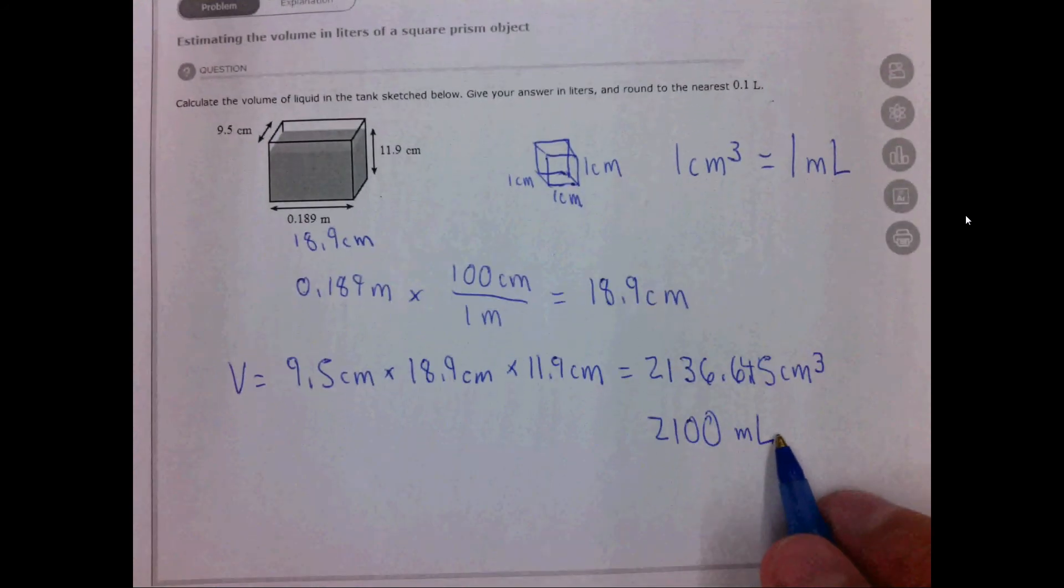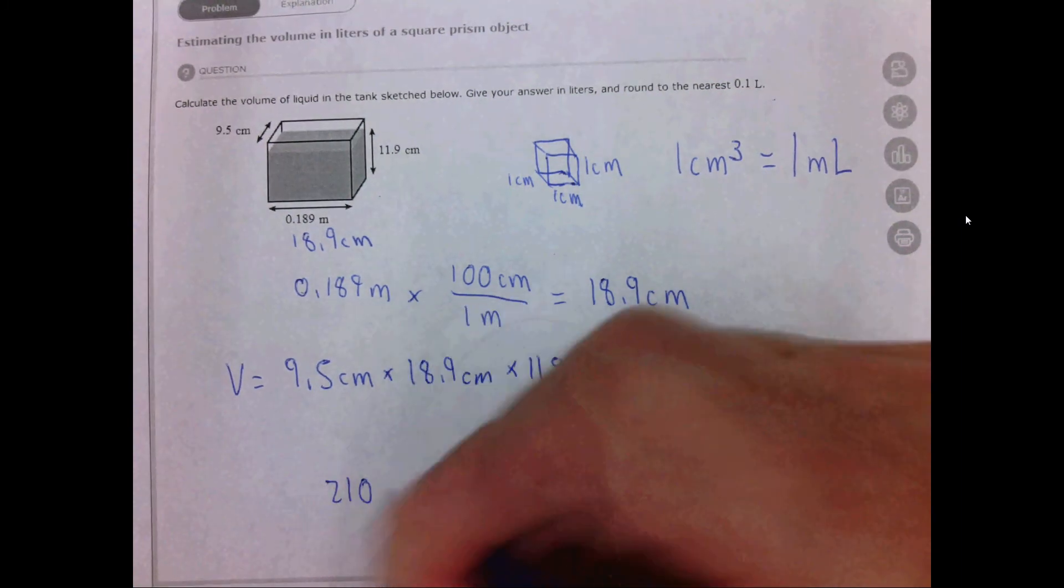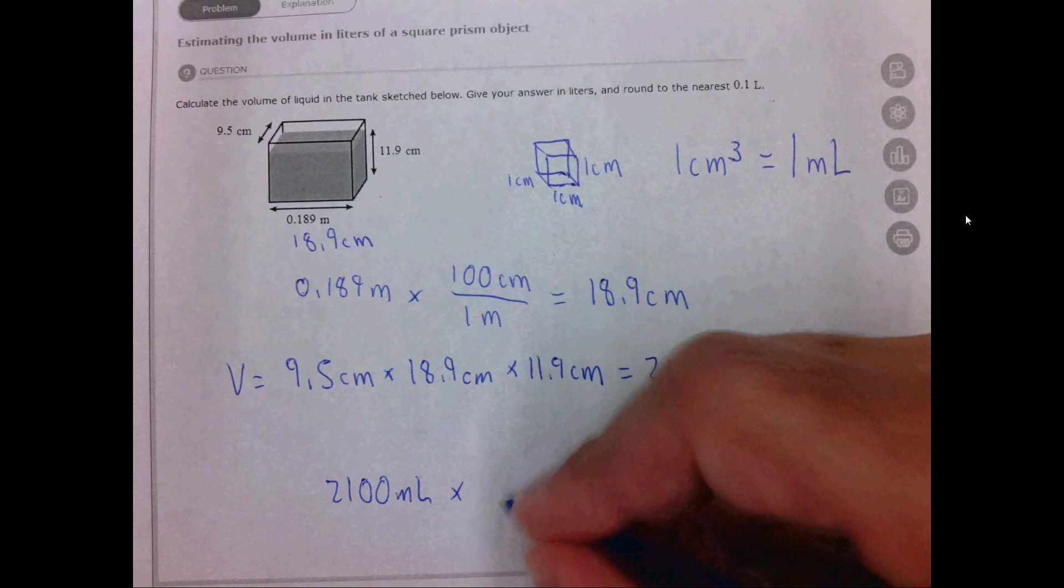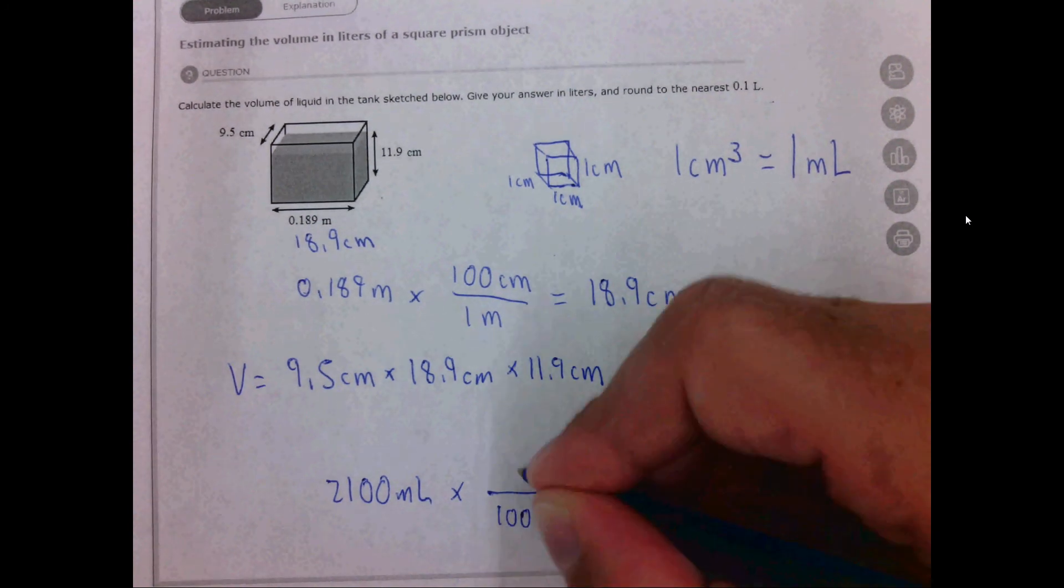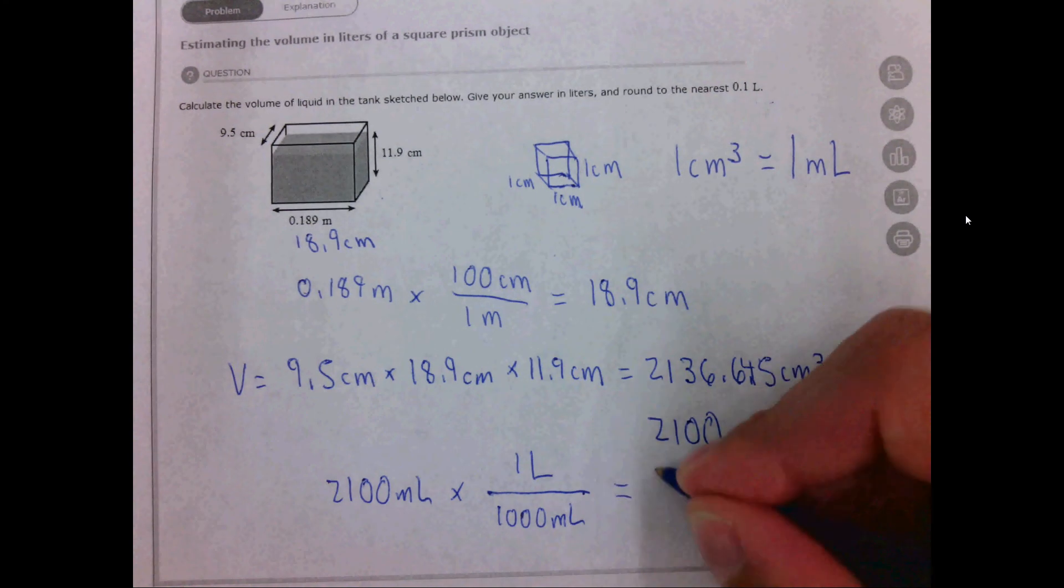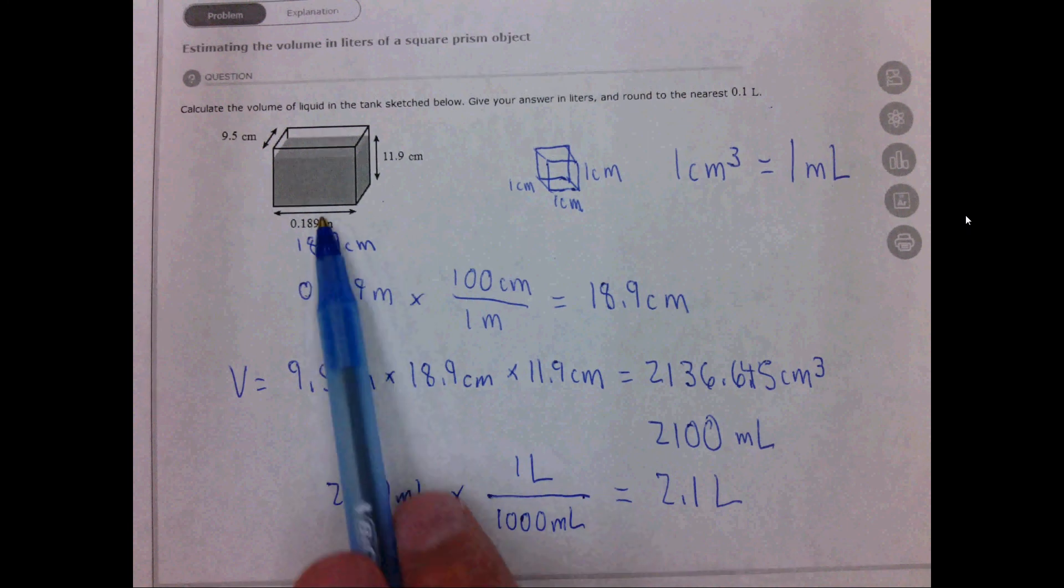Now we need to convert this volume to liters. So we take our 2100 milliliters times—we put 1000 milliliters on the bottom, one liter on the top—and we get 2.1 liters. So the volume of this container in liters is 2.1 liters.